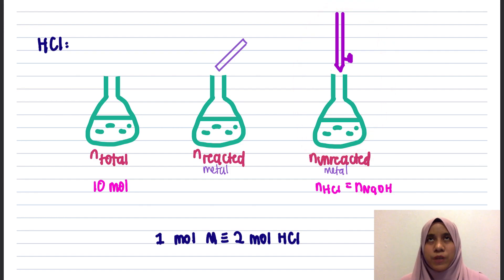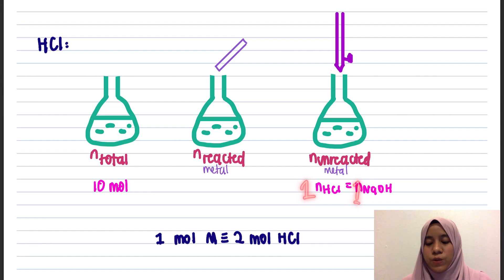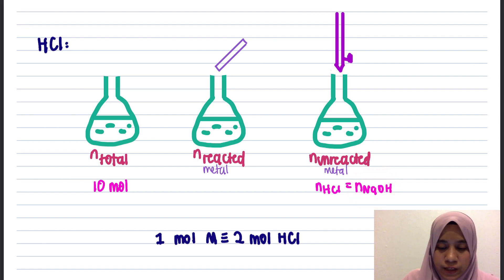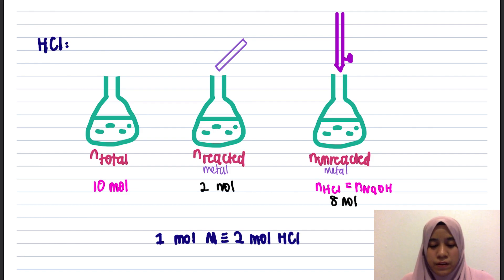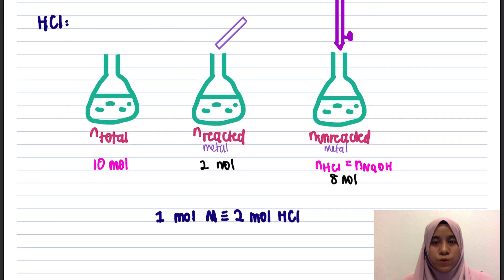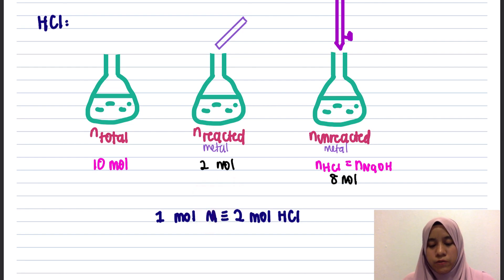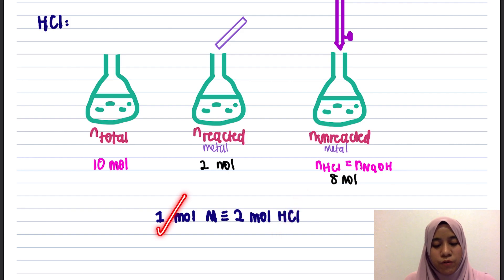Since HCl and NaOH have a 1:1 mole ratio, the moles of NaOH equal the moles of unreacted HCl. For example, if unreacted HCl is 8 moles, then reacted HCl with the metal is 10 − 8 = 2 moles. From the moles of HCl that reacted with the metal, we can use stoichiometry to find the moles of the metal, and from there determine its molar mass.